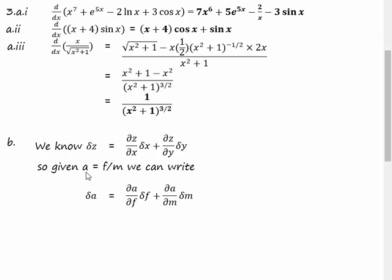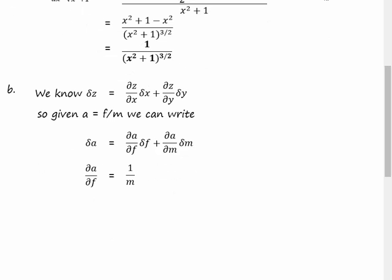Next we need to find da/df. Well if we differentiate a with respect to f we'll get 1 over m and then if we differentiate a with respect to m we're going to get minus f over m squared. So da/df equals 1 over m and differentiate a with respect to m so we'll get minus f times m to the minus 2 or minus f over m squared.